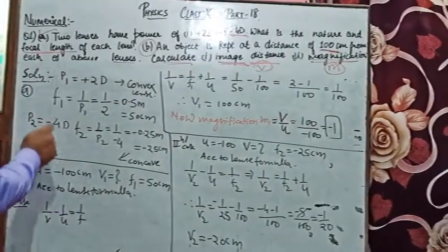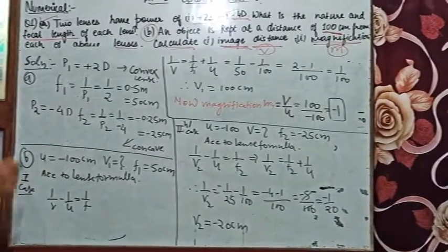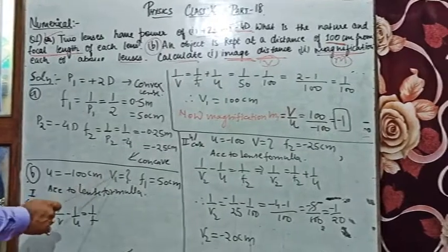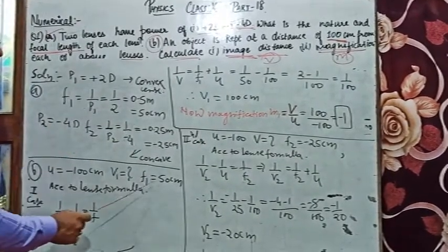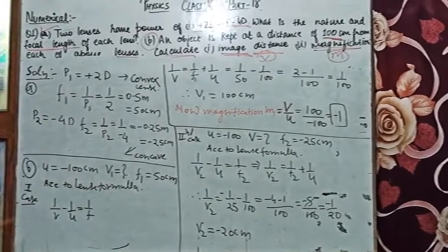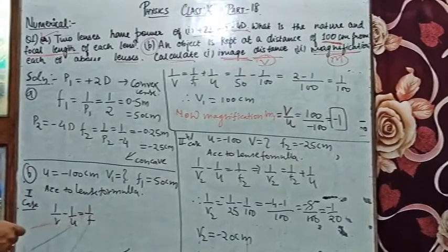Now we have the second part. We have the distance of the object is -100 cm, and the focal length is 50 cm. Let's look at the lens formula in the first case.